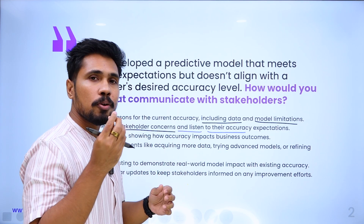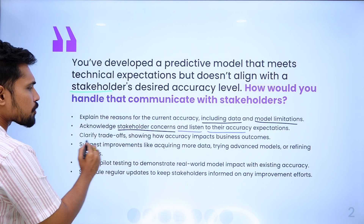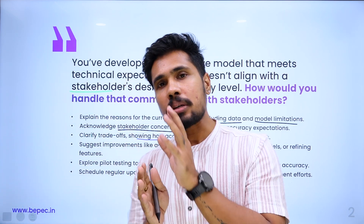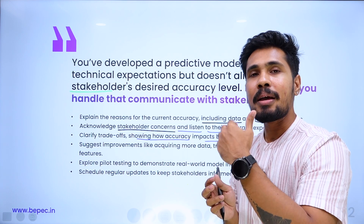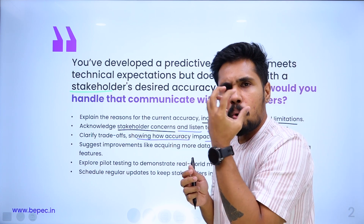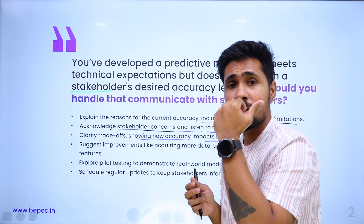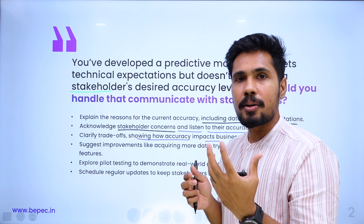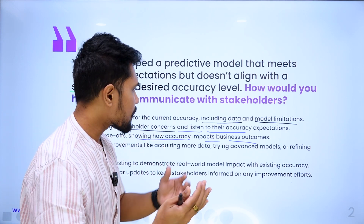Clarify trade-offs by showing how accuracy impacts business outcomes. For example, if it is an automation use case, show how this accuracy can impact business automation and what percentage of automation you can achieve. Don't just communicate accuracy as a number — translate it into efficiency gains, loss reduction, or automation improvement. If you communicate accuracy in terms of business numbers, the client will understand that the model is still delivering better profits compared to having no ML model.